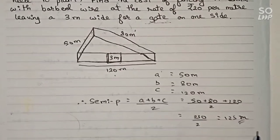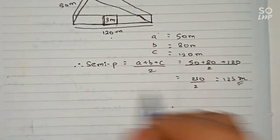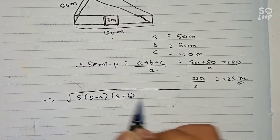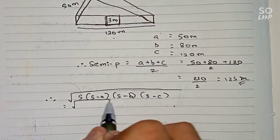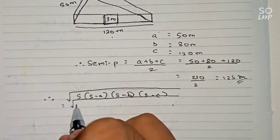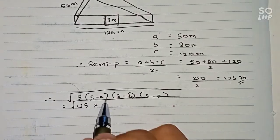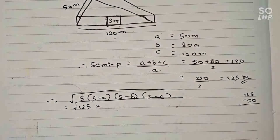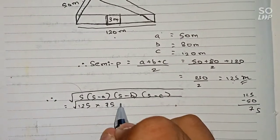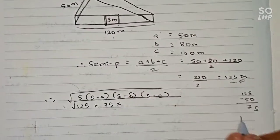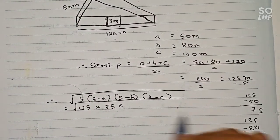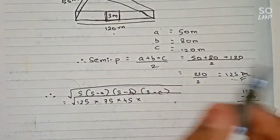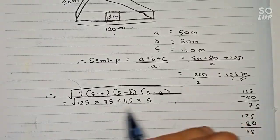Now, according to Heron's formula, area equals the square root of s(s−a)(s−b)(s−c). Putting in the values: s is 125. s minus a = 125 minus 50 = 75. s minus b = 125 minus 80 = 45. s minus c = 125 minus 120 = 5. So area equals root over 125 × 75 × 45 × 5.